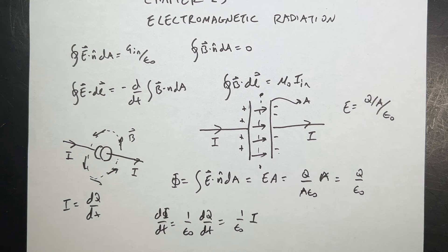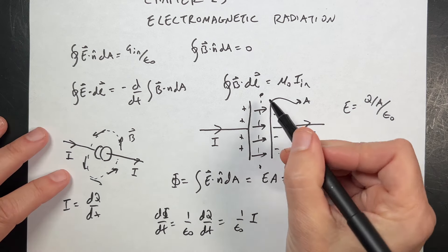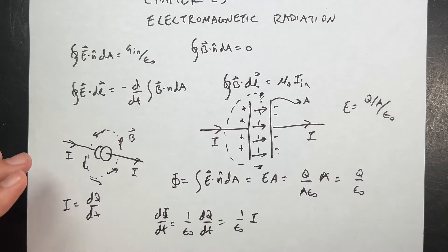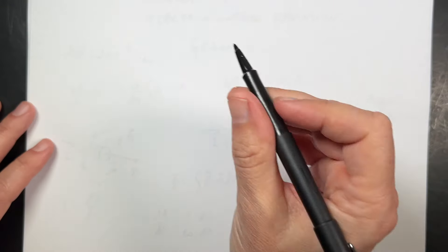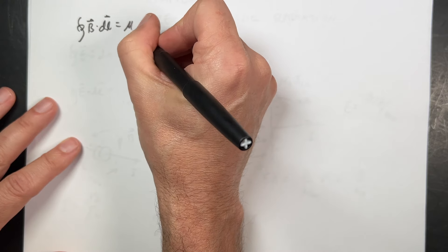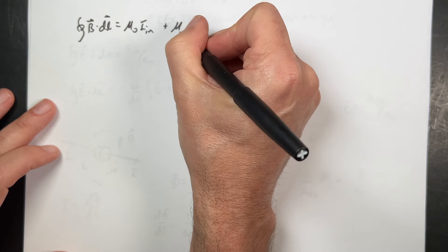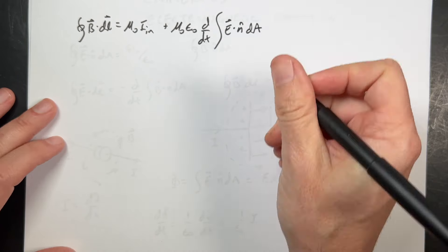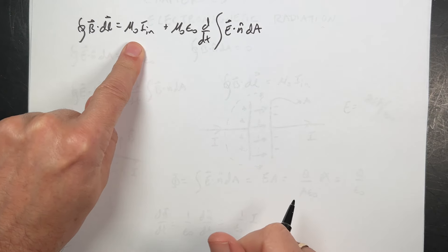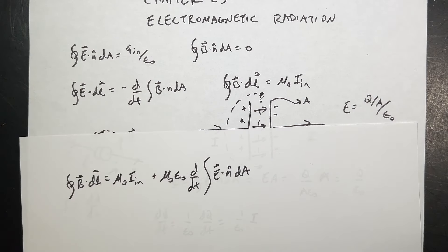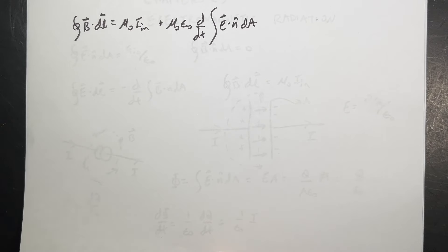This gives us the corrected Ampere-Maxwell law. If the wire is the boundary, I could also pick a surface that the current does pass through — both surfaces must agree. The way to reconcile this is to modify the equation: the integral of B dot dl equals mu-naught times I_enclosed plus mu-naught times epsilon-naught times the time derivative of the integral of E dot n-hat dA. So there are two ways to make a magnetic field: an electric current or a changing electric flux — a nice symmetry with Faraday's law.